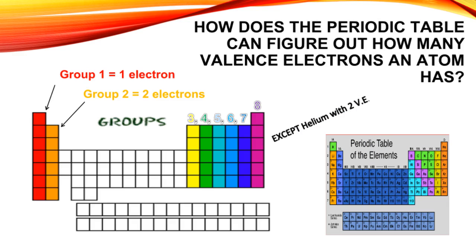How does the periodic table figure out how many valence electrons an atom has? All the elements in some groups of the periodic table have the same number of valence electrons. There is a pattern that can be observed.